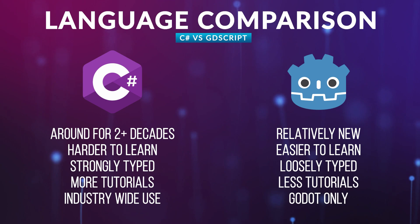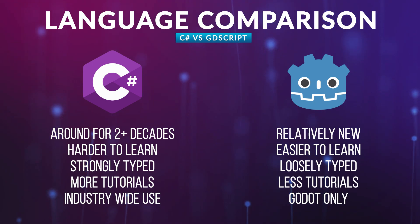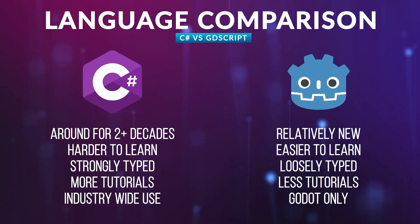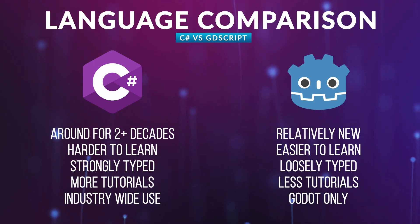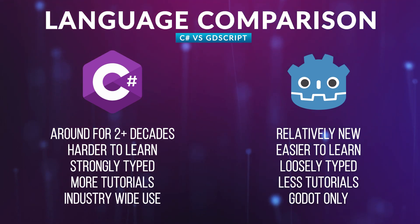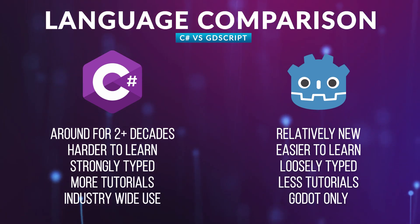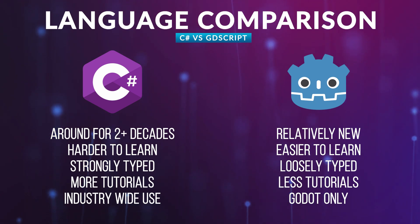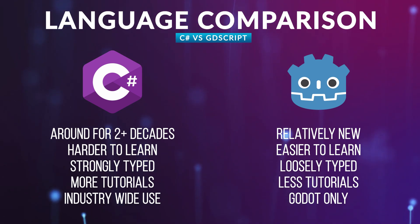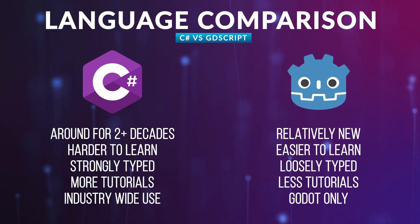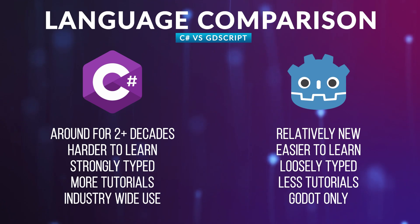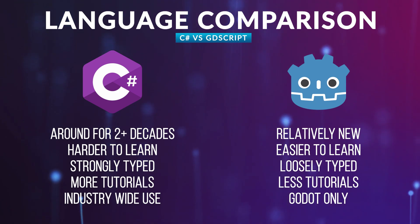Let's talk about some of the differences in these high-level languages. C# has been around for a really long time, whereas GDScript is relatively new. C# can be a little harder to learn, and GDScript is typically pretty easy. C# is a strongly typed language, which means you have to explicitly define the type of your variables, whereas GDScript doesn't require this. There are more tutorials available online for C#, whereas there are fewer for GDScript. Not all of the C# tutorials are related to game dev, but a lot of that information carries over. Lastly, C# is used throughout the software development industry, whereas GDScript is really only used in Godot.